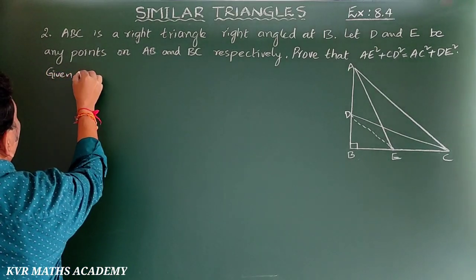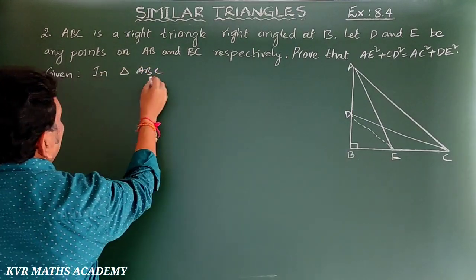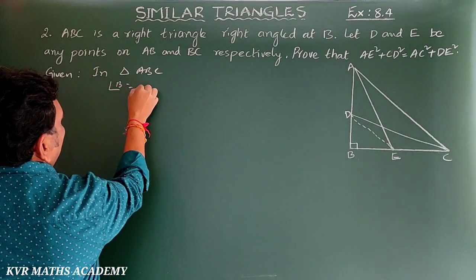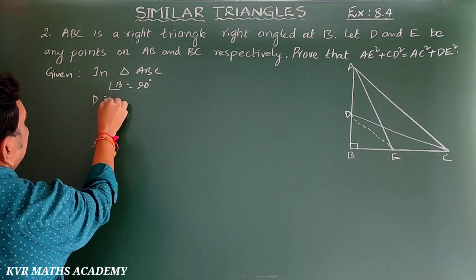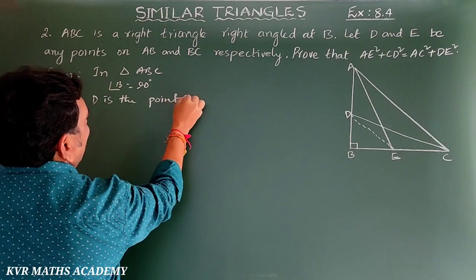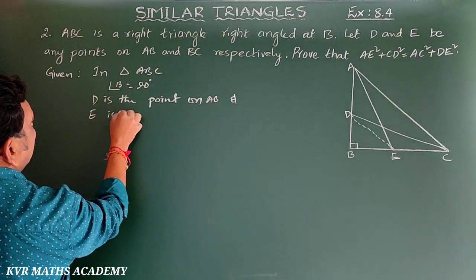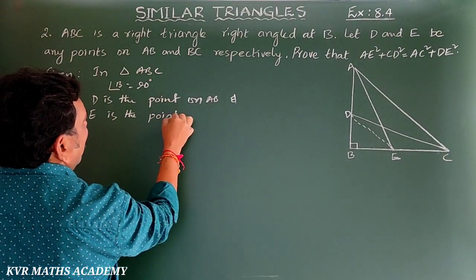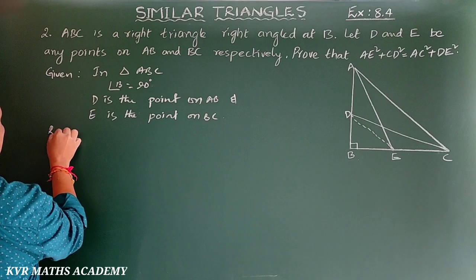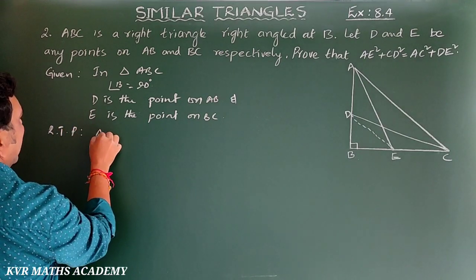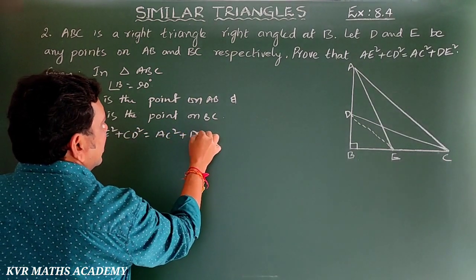Given: In triangle ABC, angle B = 90°. D is the point on AB and E is the point on BC. RTP: AE² + CD² = AC² + DE².